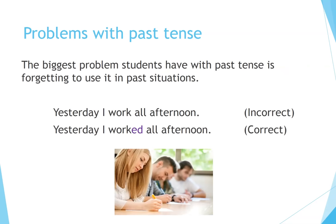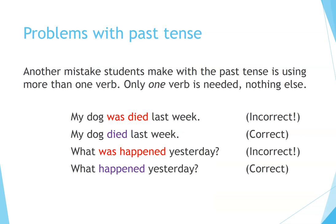The biggest problem students have with past tense is forgetting to use it in past situations. For example: 'Yesterday I work all afternoon' — incorrect. 'Yesterday I worked all afternoon' — correct. Another mistake is using more than one verb when only one is needed. 'My dog was died last week' — incorrect. 'My dog died last week' — correct. 'What was happened yesterday' — incorrect. 'What happened yesterday' — correct.